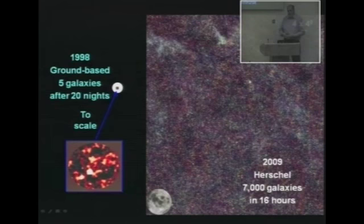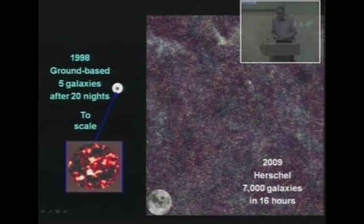This is one of the early observations from the science demonstration phase of Herschel with SPIRE, detecting 7,000 galaxies in 16 hours in one observation, and at three wavelengths simultaneously. So bringing the survey capabilities into something more comparable to what we were already able to do at shorter wavelengths. And that has produced a revolution in our ability to characterize galaxy formation and evolution.